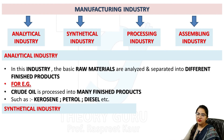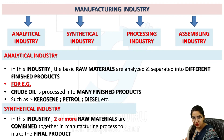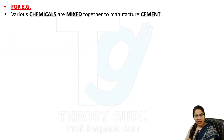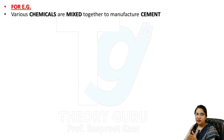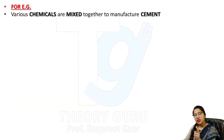Synthetical industry: in this industry, two or more raw materials are combined together in the manufacturing process to make the final product. For example, various chemicals are mixed together to make cement — two or more chemicals are mixed and one finished product is created. This is synthetical industry.